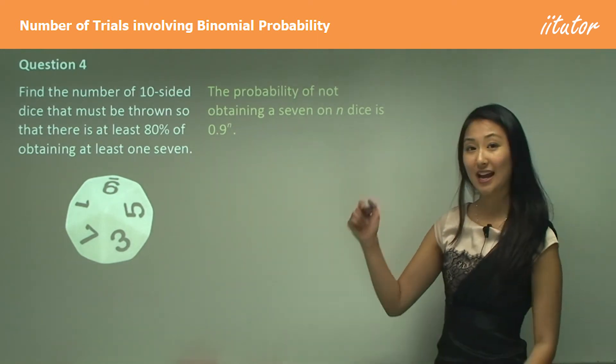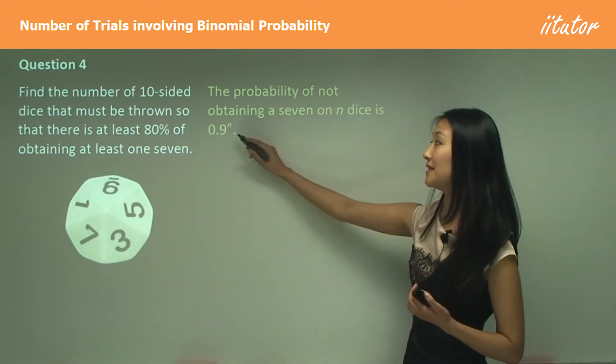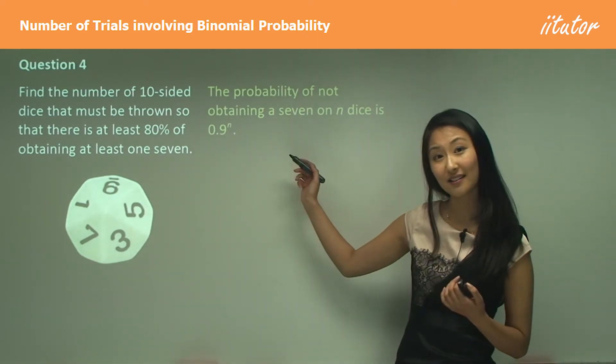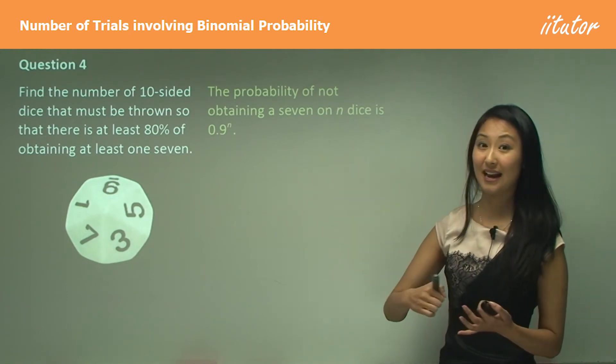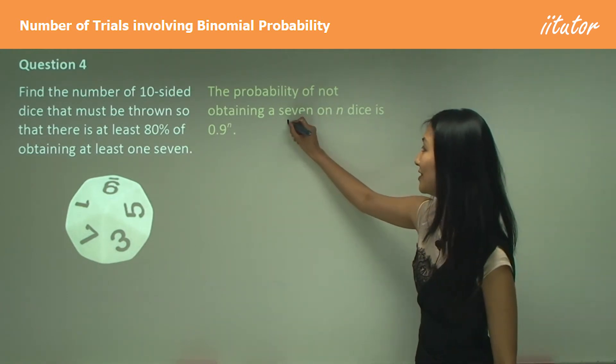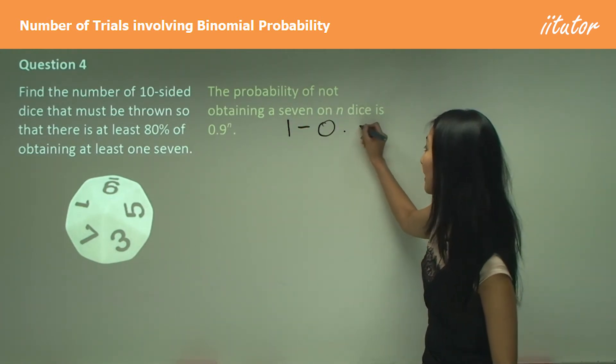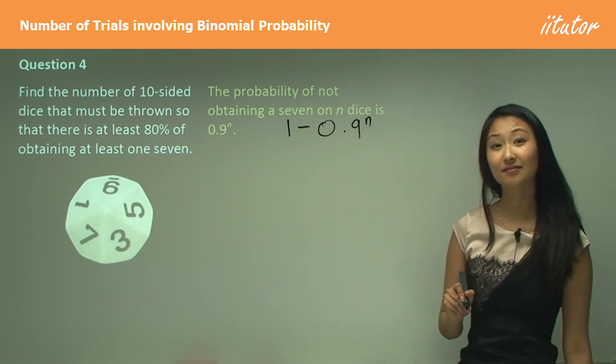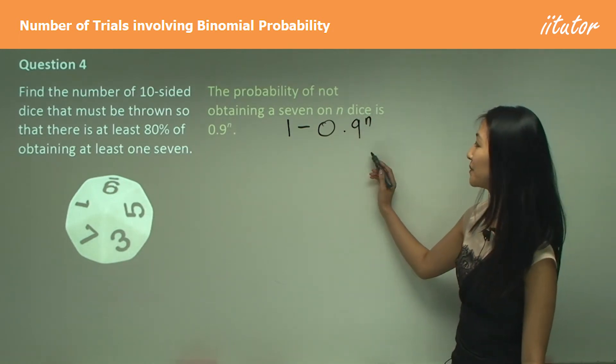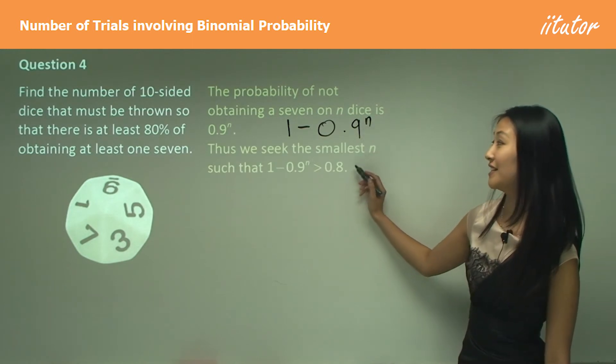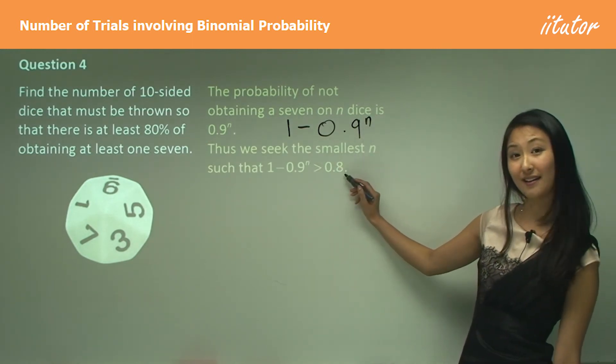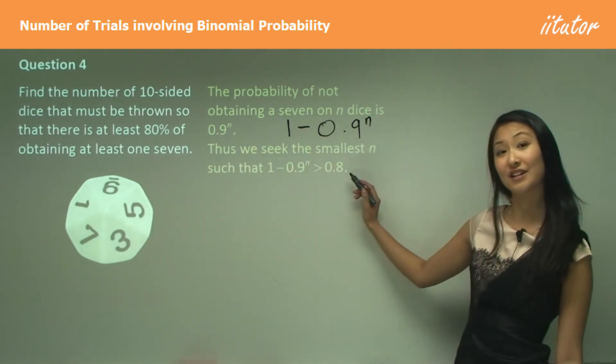The chance of getting no sevens over time is going to be 0.9 to the power of n, which means the chance of getting at least one seven is just going to be one minus that probability. We just want to find out when this is greater than 80%, which is 0.8. That's how we come up with this equation there.